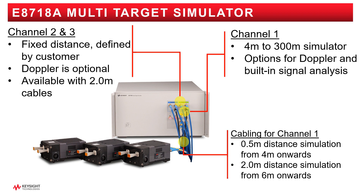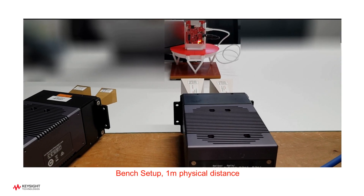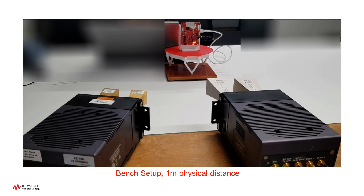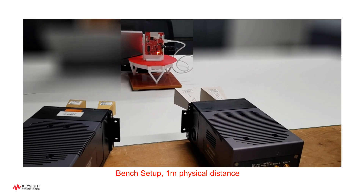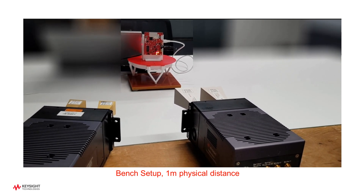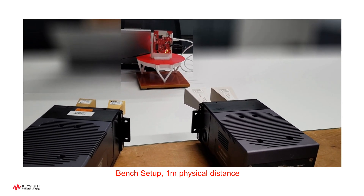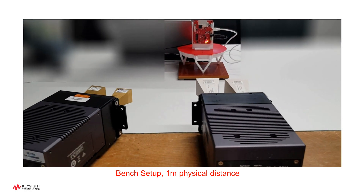While for channel 2 and 3, customers can define what distance they require, and it will be manufactured to precisely that distance. Here is a short demonstration of the multi-target simulator, where we have two targets being simulated in parallel. You will see our reference radar device from Texas Instruments with two of the Keysight remote heads, simulating two simultaneous targets.